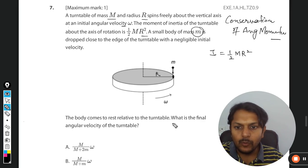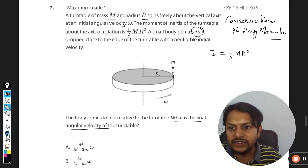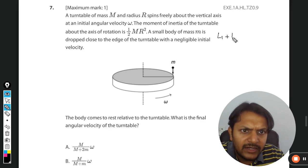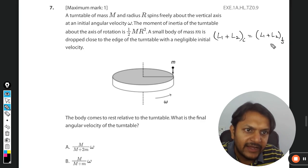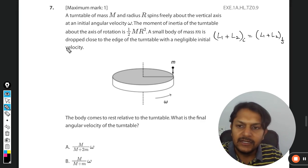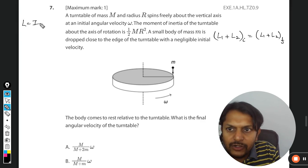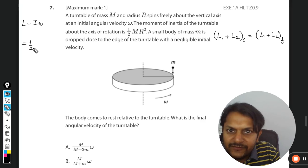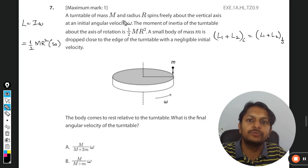Okay, let's see. Angular momentum 1 plus angular momentum 2 initially should be equal to the total momentum finally. So L₁ is the angular momentum of the disk. Now the formula for the angular momentum that we did is L = Iω, where I is given to me as ½MR² and omega is also given. We can just assume it to be omega here.